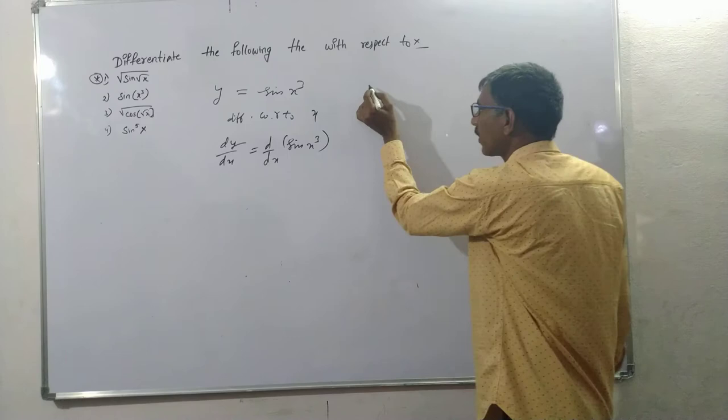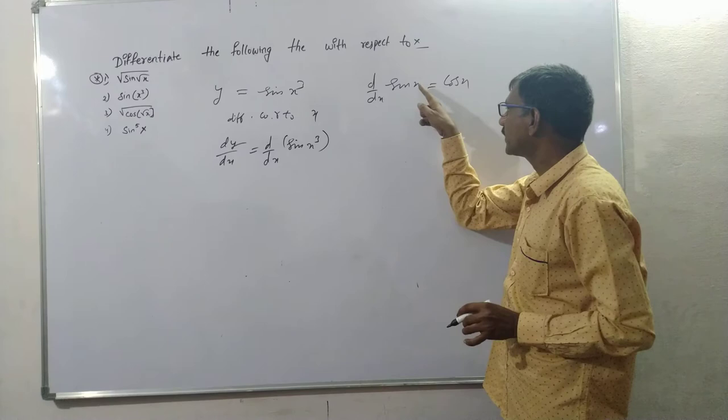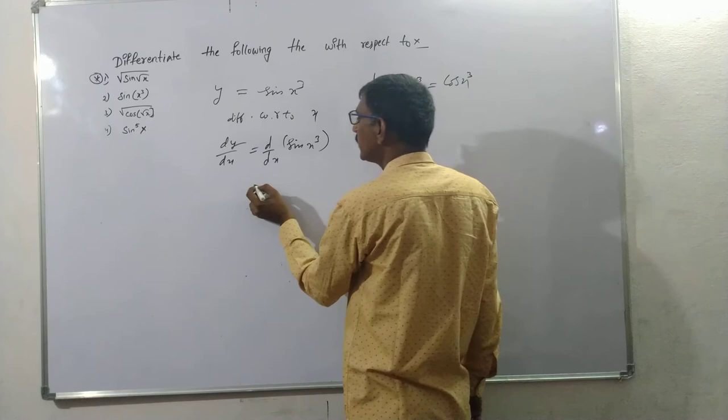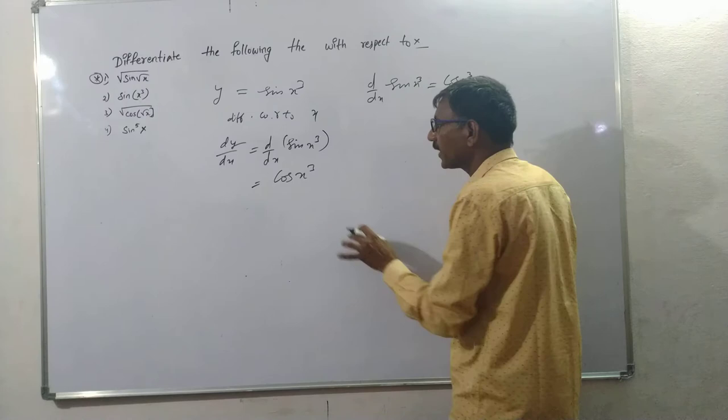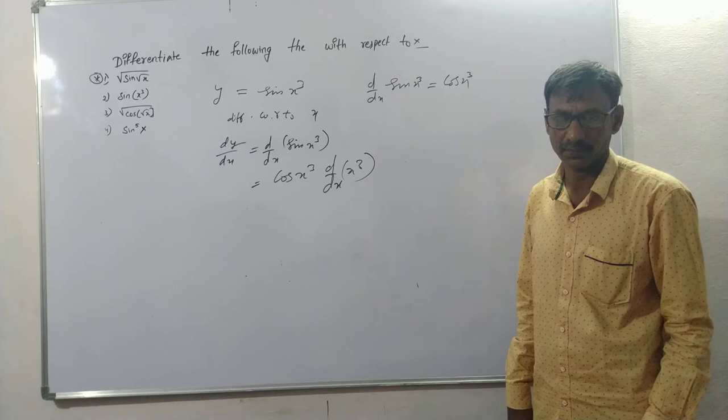The first part: the derivative of sine of x is cosine. So here, sine of x cube differentiates to cosine of x cube, and the derivative of x cube gives 3x squared by the chain rule.